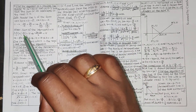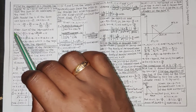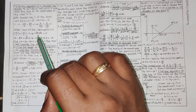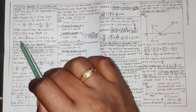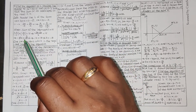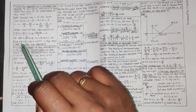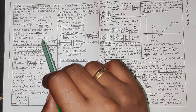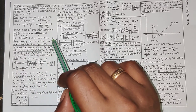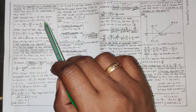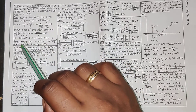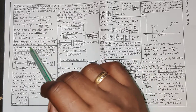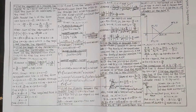So 15 equals minus k over 2 plus minus k over 3, which equals minus 3k minus 2k all over 6, giving minus 5k over 6 equals 15. Therefore minus 5k equals 90, and k equals minus 18. Substituting back: 2x plus 3y minus 18 equals 0, which is the required equation of the straight line.